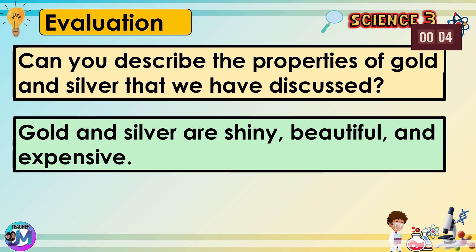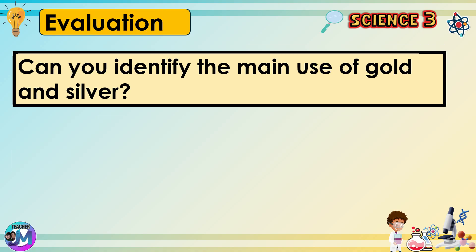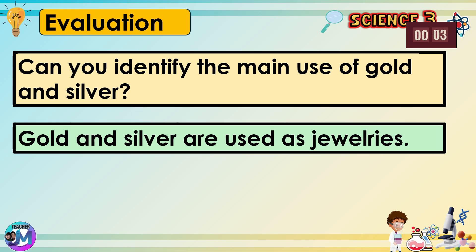Can you describe the properties of gold and silver that we have discussed? Gold and silver are shiny, beautiful, and expensive. Can you identify the main use of gold and silver? Gold and silver are used as jewelry.